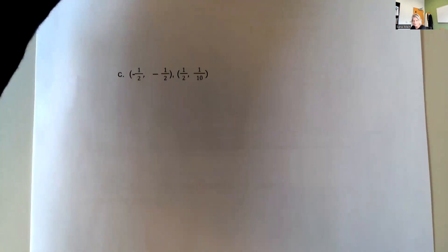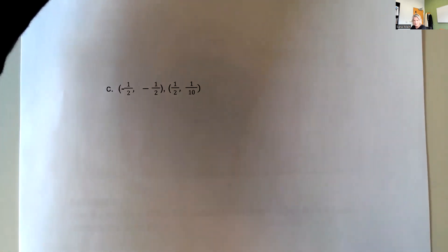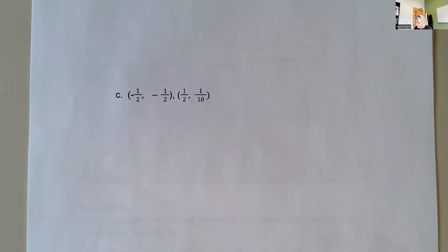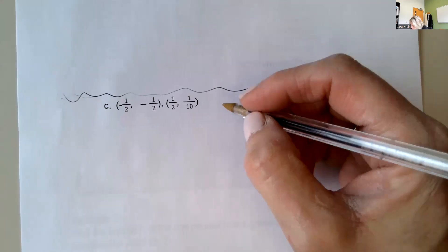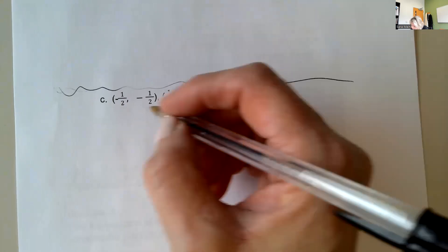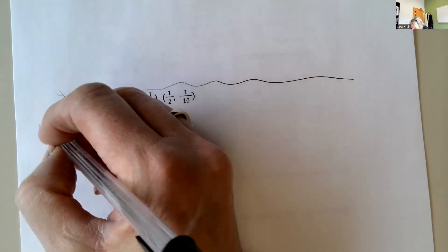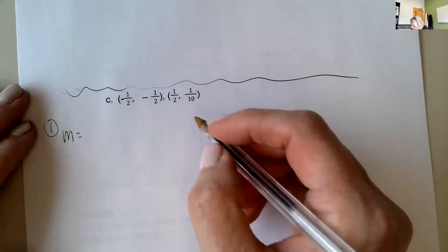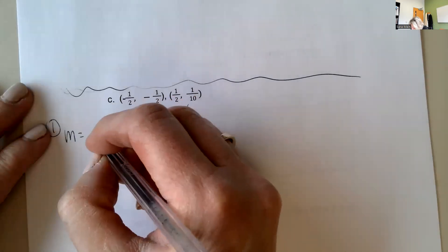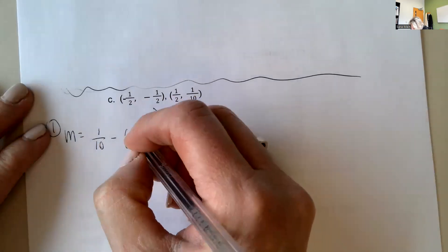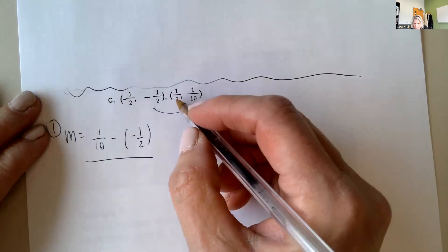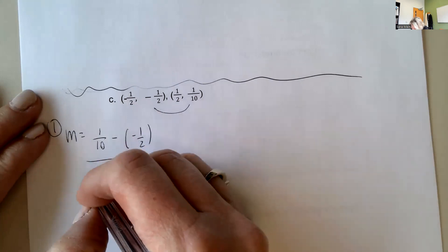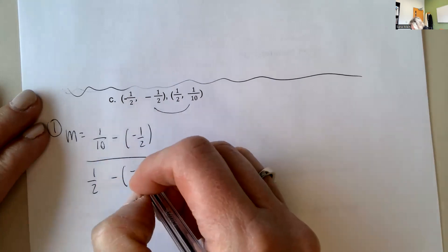Let's do practice with more of these. We've been given two points and need to find the equation of the line. The first thing we need to do is find the slope. So I'm going to take one-tenth and subtract negative one-half, all over the change in x: one-half subtracting a negative one-half.